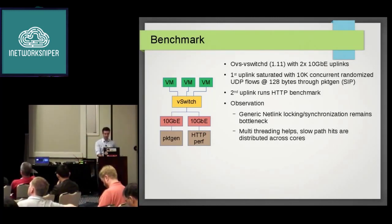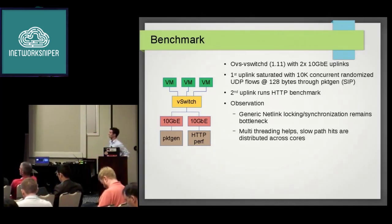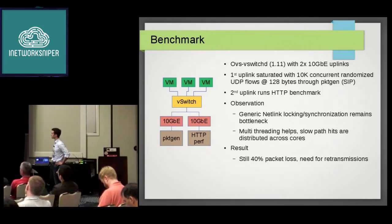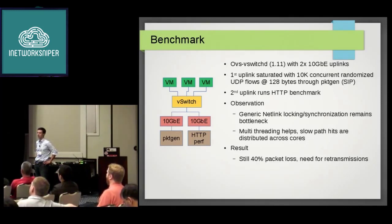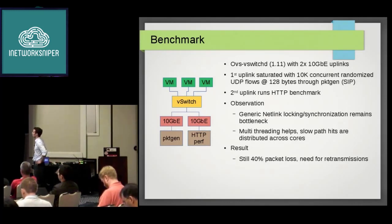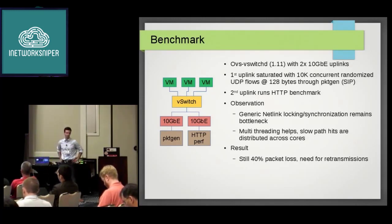That has improved OVS performance under what you could call a DOS or a normal use case pattern. The result is still 40% packet loss on our machines — that number depends a lot on what hardware you're running on. But the fact is, if you have two 10-gig uplinks and one is saturated with random flows, you're not able to use the second one for an HTTP benchmark without packet loss, which is something you would expect a switch to handle.